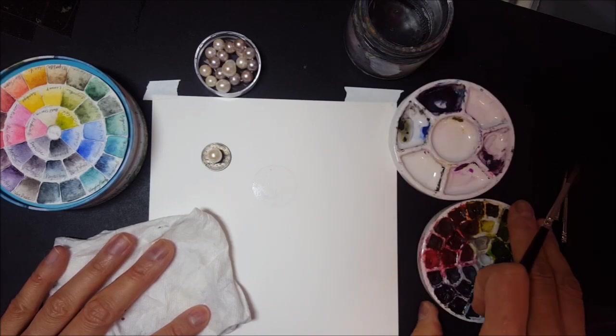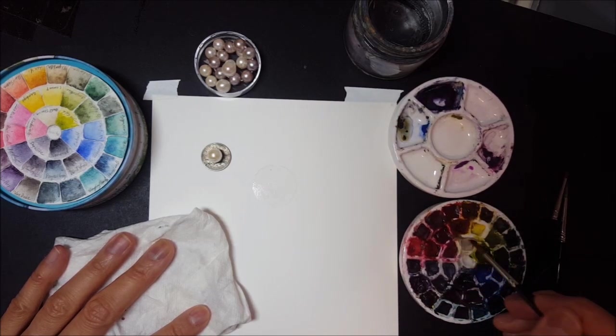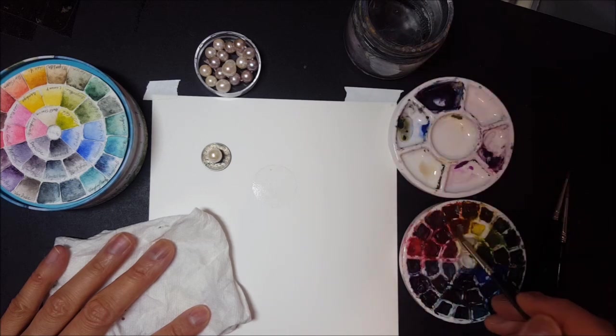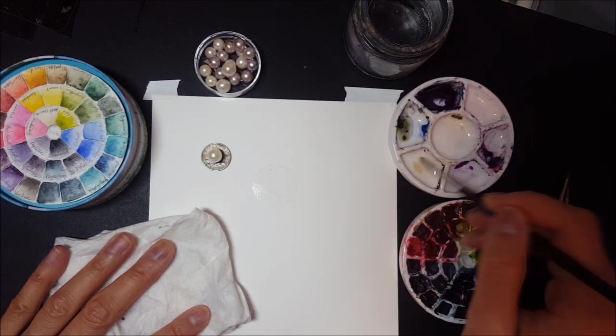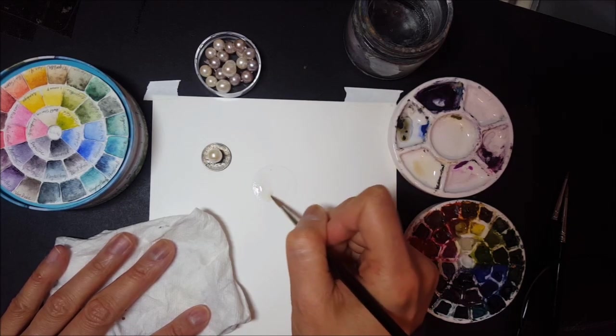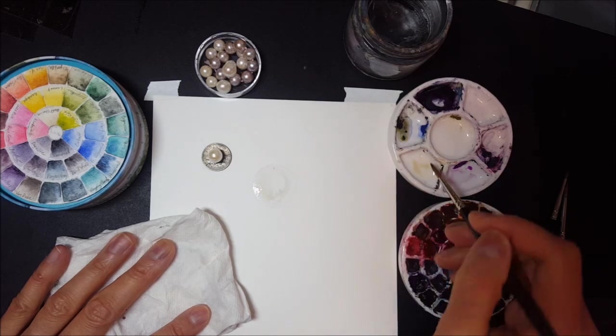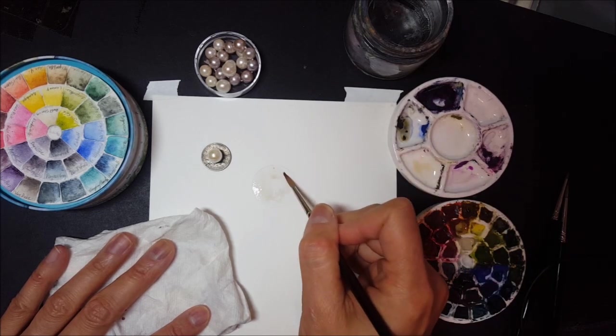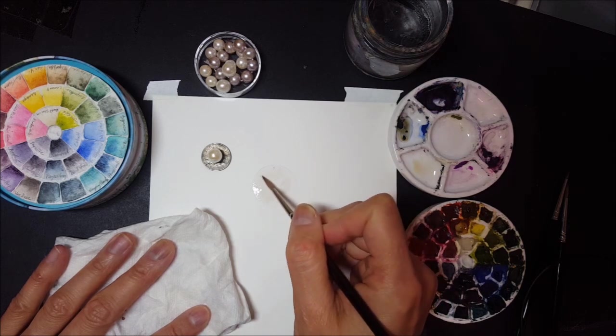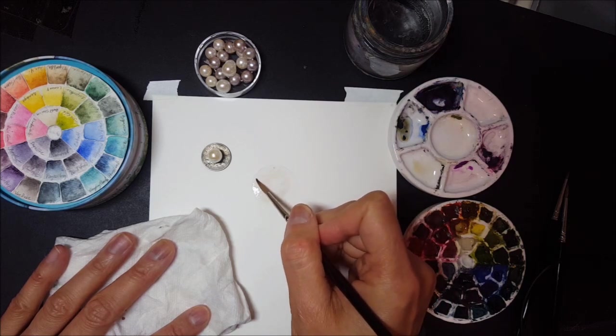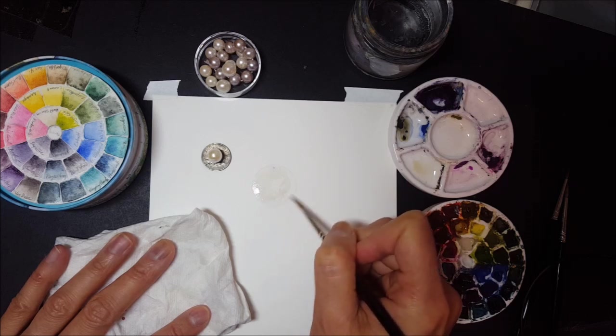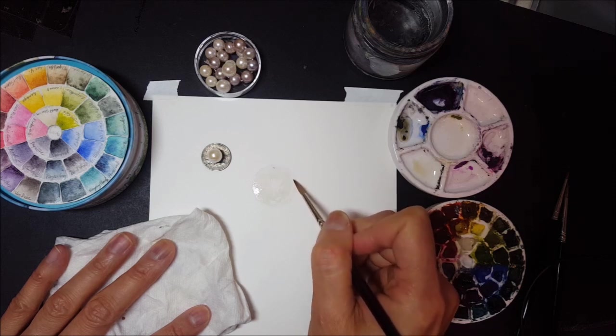Once I have that initial wash, I should have mixed my colors ahead of time, but I'm going to start with a buff titanium and a tiny bit of gamboge. And lay that in. It is an extremely pale wash that I'm doing right now. And I'm just painting the entire surface.